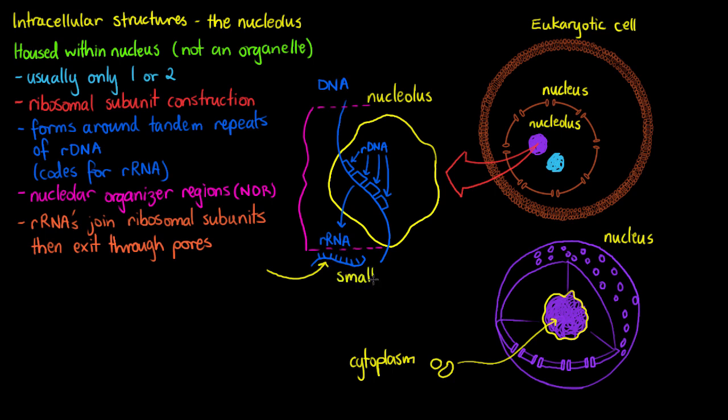Once inside the Nucleolar Organizer Region of our Nucleolus, the large and small subunits will then join with their respective portions of ribosomal RNA. Then they can leave through the nuclear envelope or through the nuclear pores of the nuclear envelope once more to form a full ribosome.